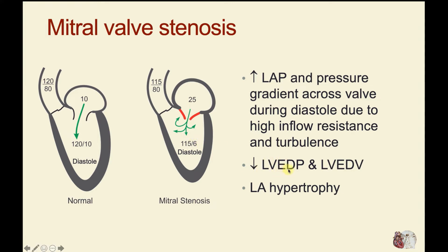We will also see a decrease in diastolic pressure and diastolic volume, as well as left atrial hypertrophy, because the left atrium is now having to generate much higher pressures in order to move blood across that mitral valve and fill the left ventricle.